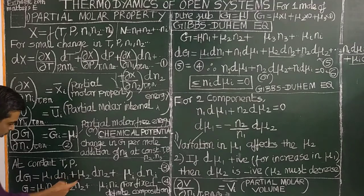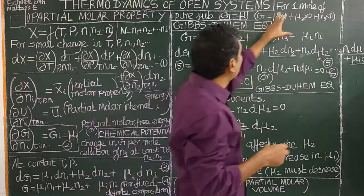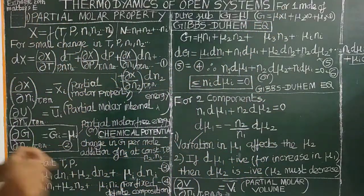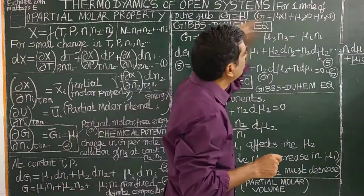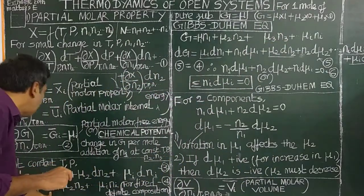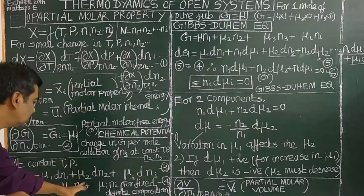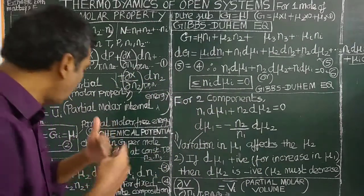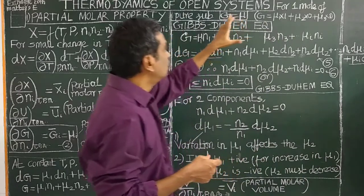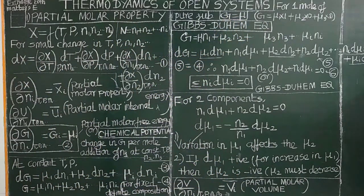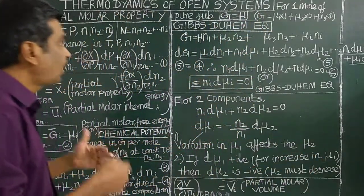dG equals μ1 dN1 plus μ2 dN2 plus dot dot dot. Now for one mole of a pure gas: μ1 goes into the number of moles of pure component 1, and the number of moles of component 2 is zero, so the equation reduces to: for one mole of a pure component, the chemical potential is equal to the free energy.